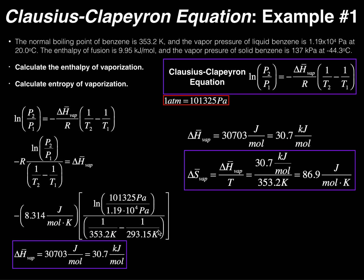Now for temperatures. T1 is the temperature of the liquid. The vapor pressure of liquid benzene is given at 20°C. Converting: 20 + 273.15 = 293.15 K, so T1 = 293.15 K. T2 is the temperature of the gas — that's the normal boiling point, 353.2 K. So T2 = 353.2 K.